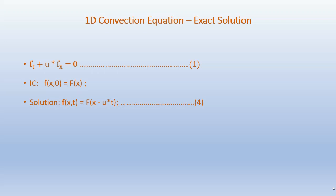The 1D convection equation is reproduced here as f_t plus u times f_x equals 0. If we have an initial condition f(x, 0) equals F(x), then the solution f(x, t) can be written as F(x minus u*t). This can be verified by substituting this solution back into the original PDE.